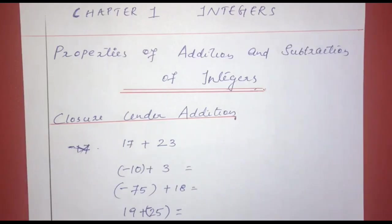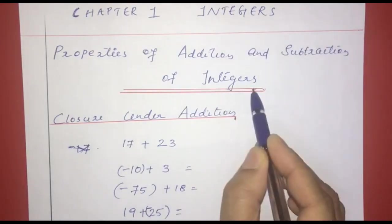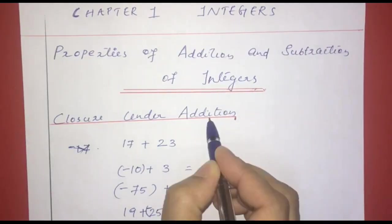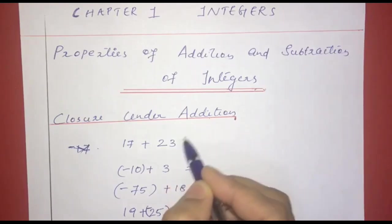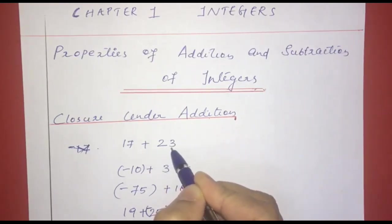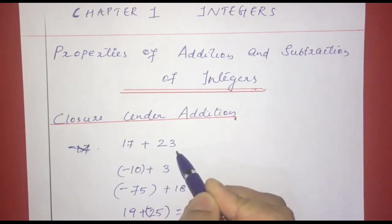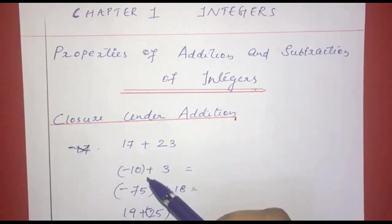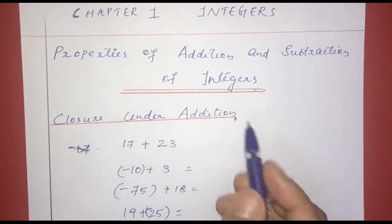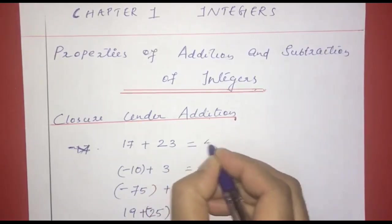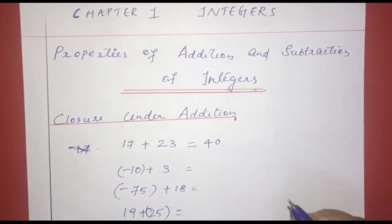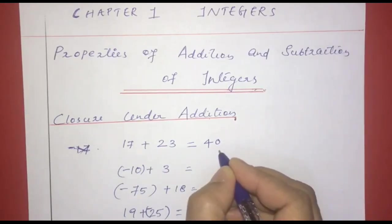We will look at the closure properties. We can see the integers, which are the numbers called integers. If we have two integers, we look at their sum. In addition, we have 17 plus 23. What does 17 add 23? We get 40. Positive 40. This is an integer.